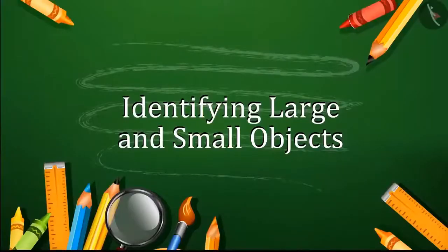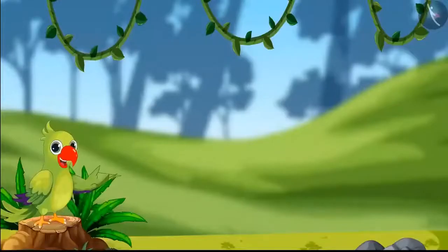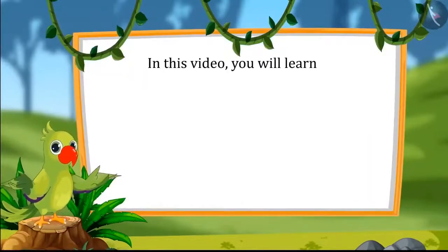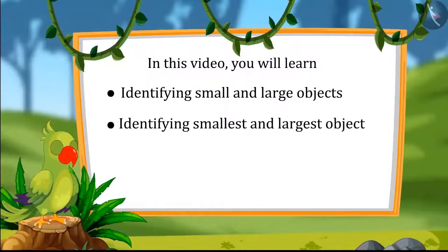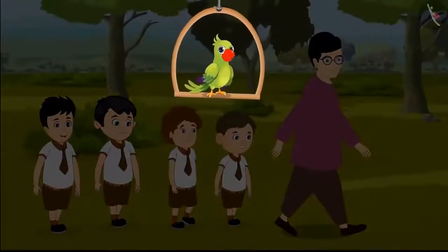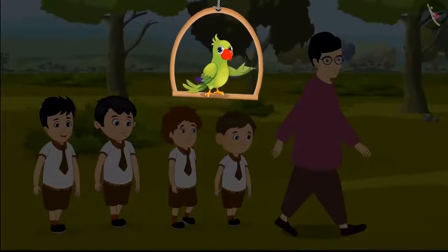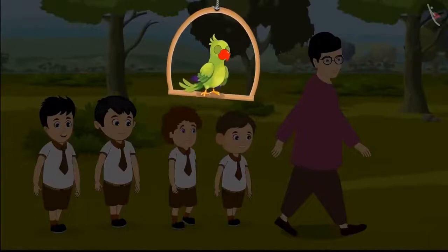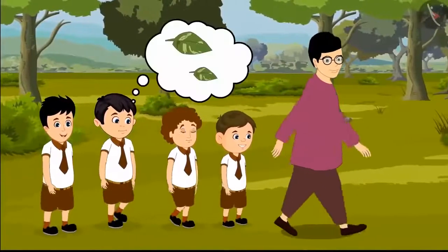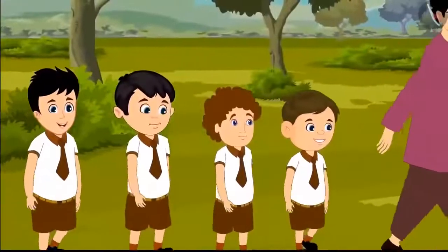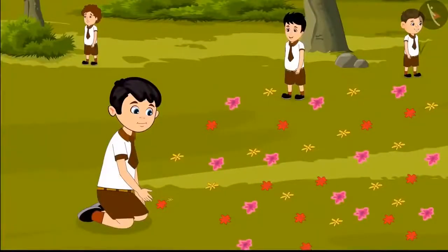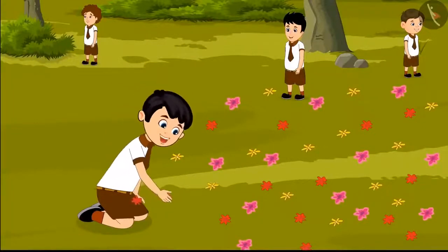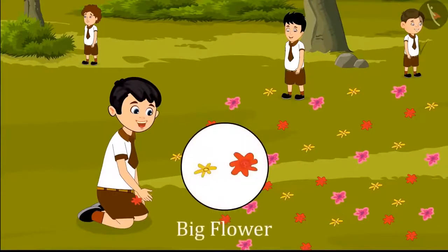Identifying large and small objects. Hello friends, I am a parrot and I welcome you to this lesson. Today, Chotu was taken for a walk by the school to a nearby forest and has homework to gather some things and paste them in his notebook. Chotu thought of taking two flowers, two leaves, and two bird feathers from the forest. While walking, he found fallen flowers under a tree and picked two: 'I will take a small flower and a large flower.'